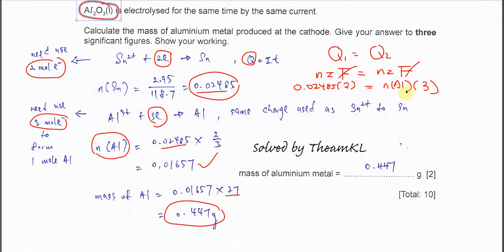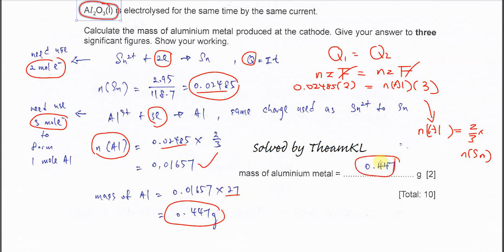Therefore the moles of aluminium equals two over three times the moles of Sn. Once you get the moles of aluminium, multiply by the molar mass to get the mass. Make sure your answer is given to three significant figures. Okay, that's all. Thank you.